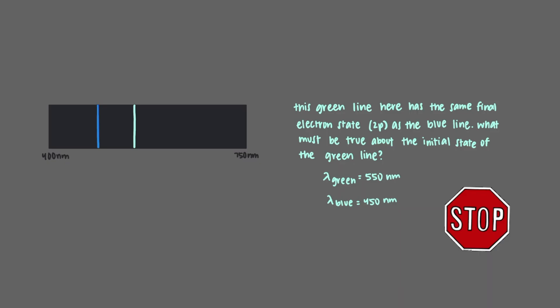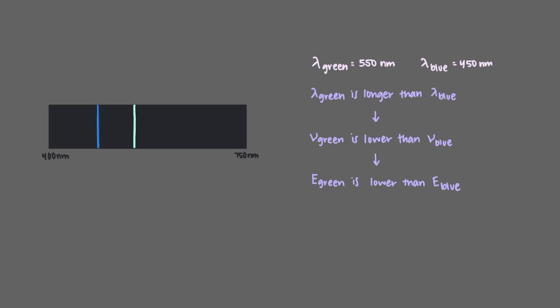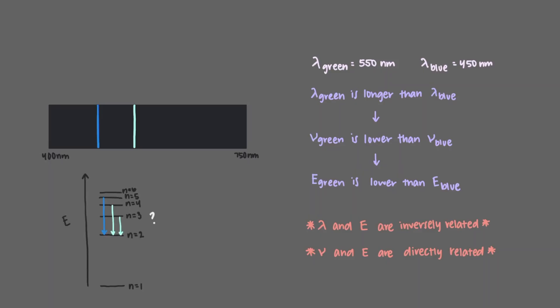This green line here has the same final electron state as the blue line. What must be true about the initial state of the green line? The wavelength of green light is 550 nanometers and the wavelength of blue light is 450 nanometers. Green light has a longer wavelength than blue light, which means it is lower in frequency and also lower in energy. Wavelength and energy are inversely related, and frequency and energy are directly related. The green light is the light emitted when the electron wave undergoes a transformation from n equals 4 to n equals 2.